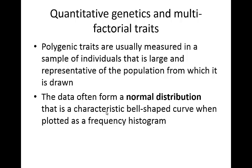These polygenic traits are usually measured in a large sample of individuals that is representative of the population from which it's drawn. For example, if you were looking at something like height, you want to make sure that you get people from all different nationalities, backgrounds, and countries of the world, because they're all going to have different environmental components to their genetic component as well. The data that we find is going to form a normal distribution, the characteristic bell-shaped curve when you plot it as a frequency histogram.